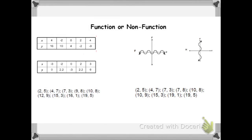Today we're going to try to identify functions from different types of representations: tables, graphs, and sets of points. We need to remember that the definition of a function is that every x value, or input, can be paired with only one y value, or output. So we're going to start with our first table.